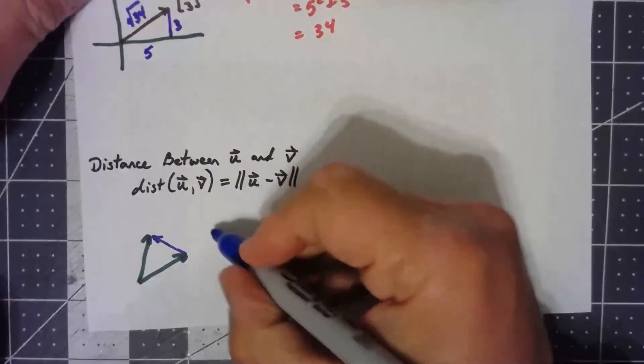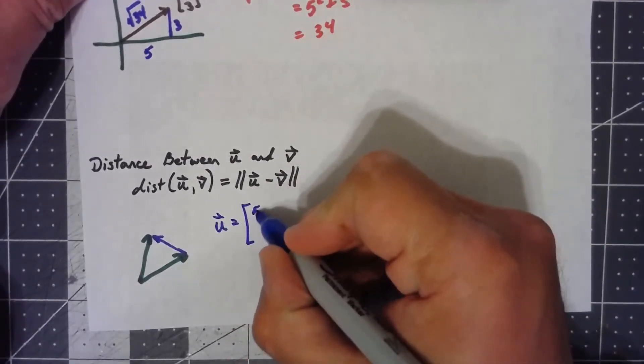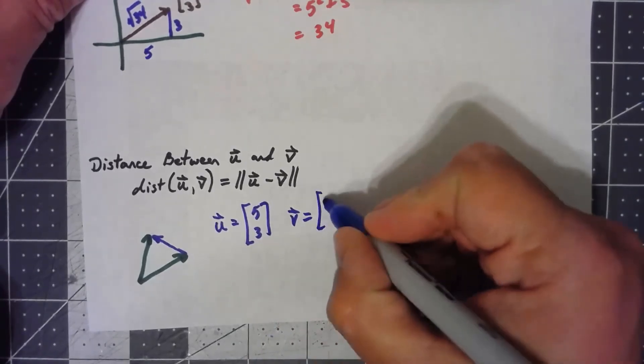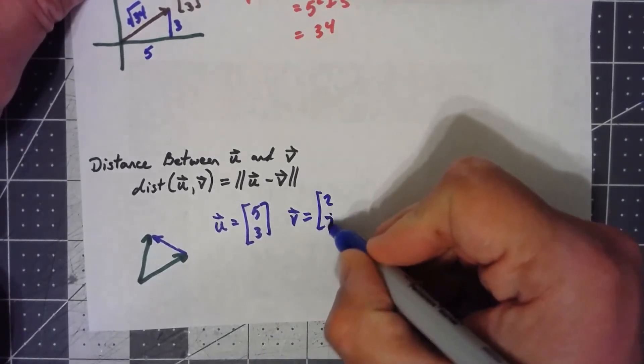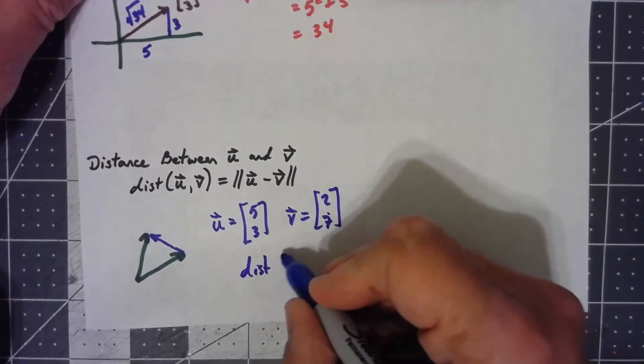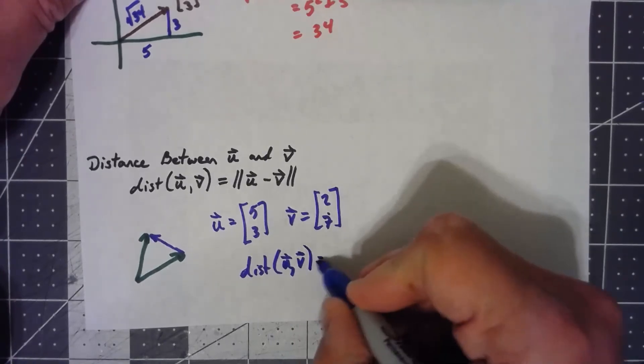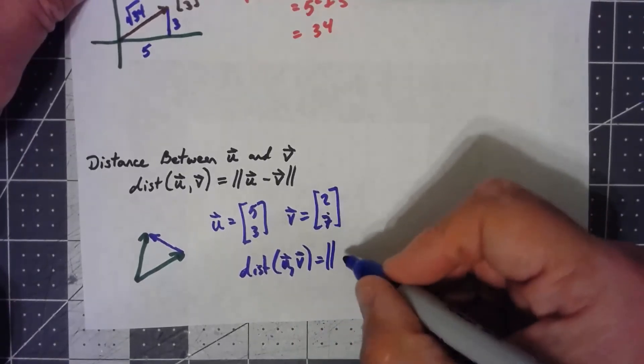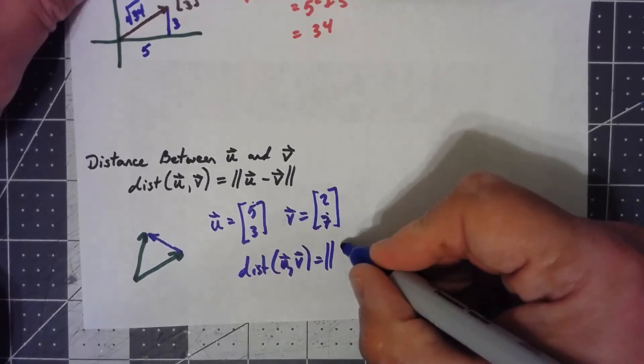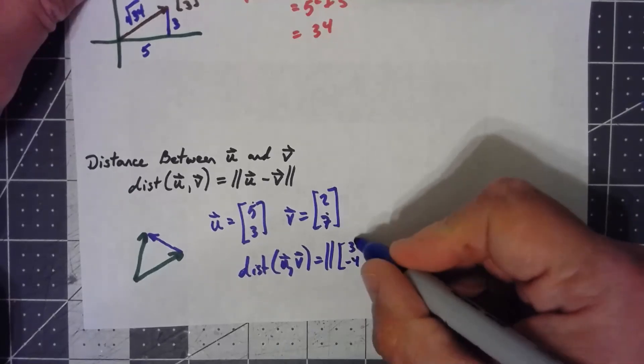So I'll just do a two-dimensional example. If I write a vector v is 2, 7, the distance between u and v is the norm of subtracting them, 5 minus 2 is 3, 3 minus 7 is negative 4.